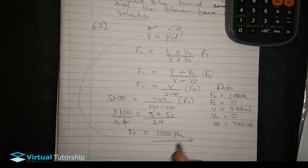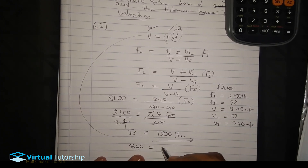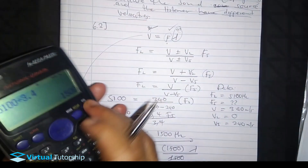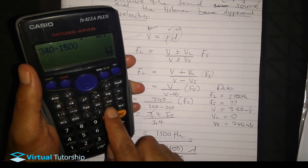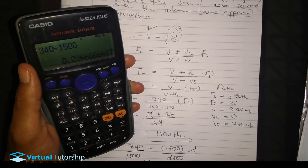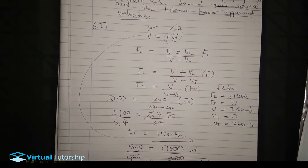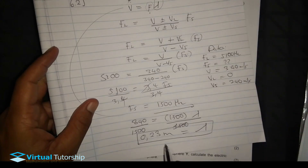Now I can calculate the wavelength. Using velocity equals frequency times wavelength: 340 equals 1500 times lambda. Therefore lambda equals 340 divided by 1500, which equals approximately 0.23 meters. So the wavelength of the sound emitted by the source is 0.23 meters.